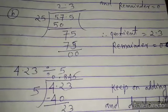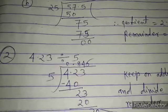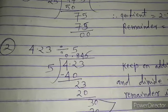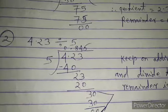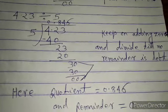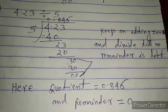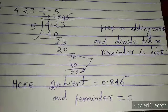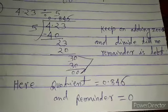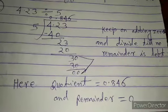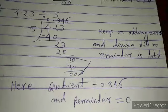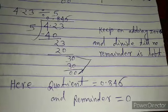In the next question, we divide 4.23 by 5. When we divide 4.23 by 5, we observe that 5×8 is 40. So we place the decimal before 8. To indicate the whole number part is 0, we place 0 before the decimal point.